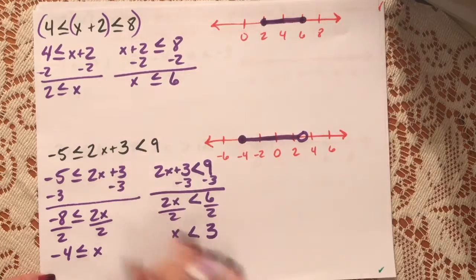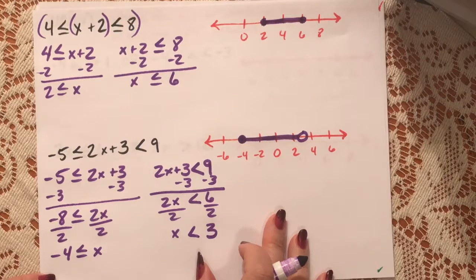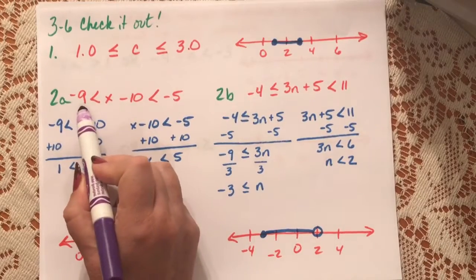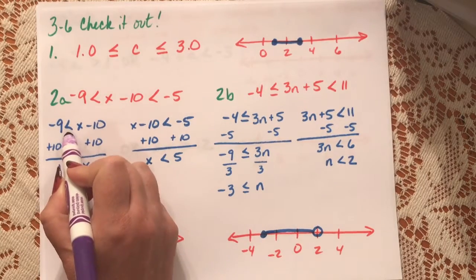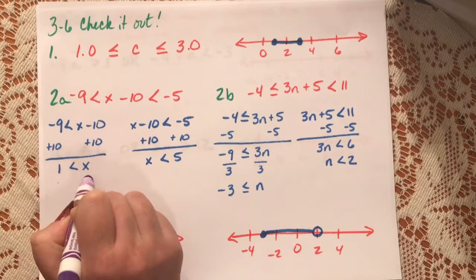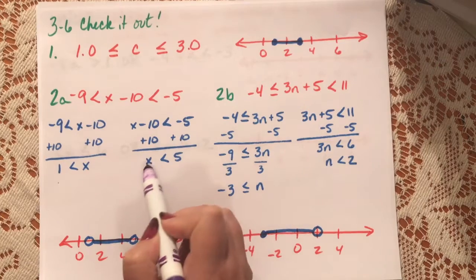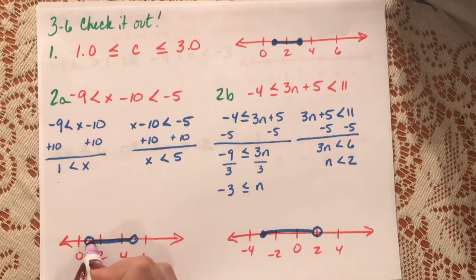This is the information you need to do Check It Out number 2 — please pause here and try both of them now. For number 2, we're solving: negative 9 is smaller than x minus 10. Add 10 to both sides: 1 is smaller than x. Add 10 to both sides of the second: x is smaller than 5. So we have an open circle at 1 and an open circle at 5, and x is larger than 1 and smaller than 5.